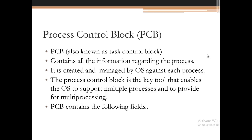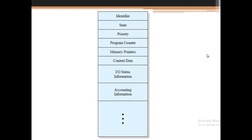The process control block is the key tool that enables the operating system to support multiple processes and provide for multi-processing. When more than one program is kept in memory simultaneously, the operating system uses PCBs to identify each program, differentiate between them, and track the resources assigned to each. Some of the most important fields in every PCB are: identifier, state, priority, program counter, memory pointers, context data, input/output status information, accounting information, and more.